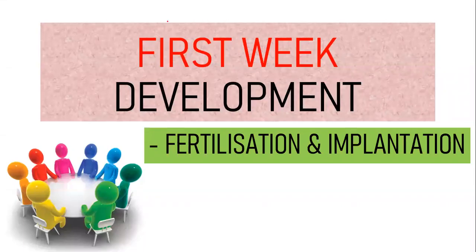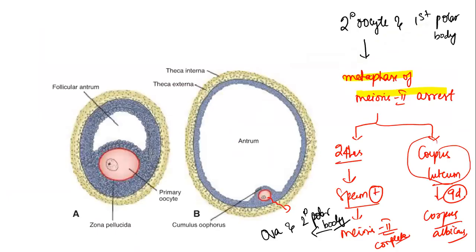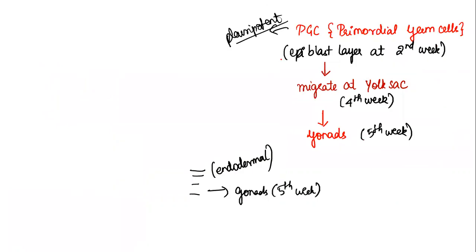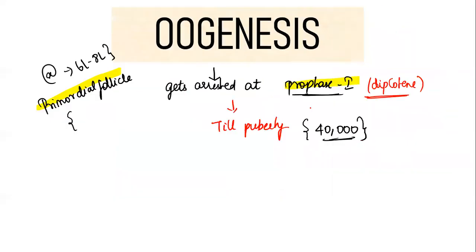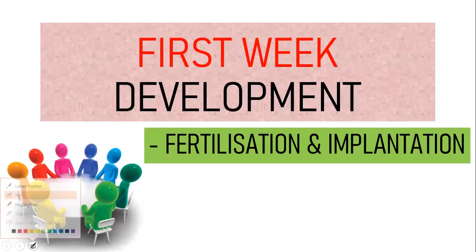Hello, we covered gametogenesis in the last video. The key takeaways are: the duration of spermatogenesis, where the secondary oocyte and primary oocyte get arrested, and their origin from primordial germ cells. All gametes arise from primordial germ cells of the epiblast layer, which migrate to the yolk sac and then to the gonads for further development. Now let us get to first week development, which will cover fertilization and implantation.